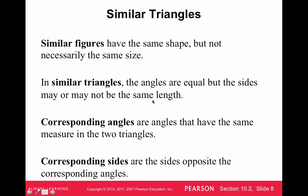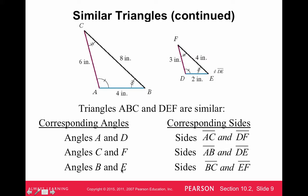So essentially the same triangle, just different lengths, different size. And corresponding angles are angles that have the same measure, and corresponding sides are the sides that correspond from the two triangles that are similar. So here's an example here, like AC is a corresponding side to FD, CB this side here is a corresponding side to this, and so on and so forth. So they're just saying how we call things corresponding angles and corresponding sides.